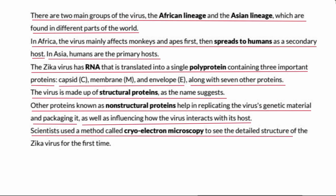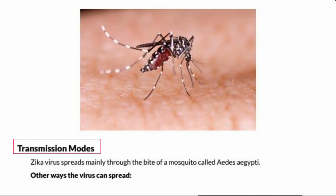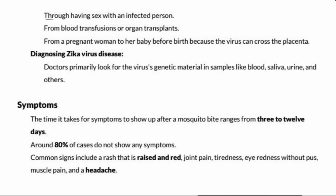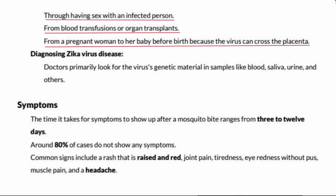Scientists used a method called cryo-electron microscopy to see the detailed structure of the Zika virus for the first time. Transmission modes: Zika virus spreads mainly through the bite of a mosquito called Aedes aegypti. Other ways the virus can spread include through sex with an infected person, blood transfusion or organ transplants, and from a pregnant woman to her baby before birth, because the virus can cross the placenta.